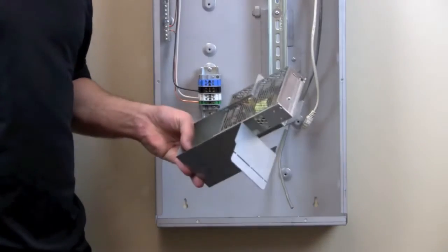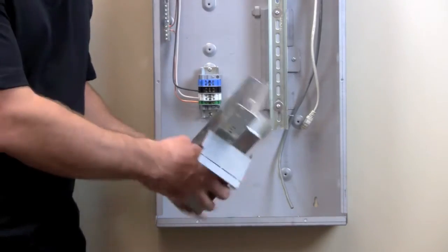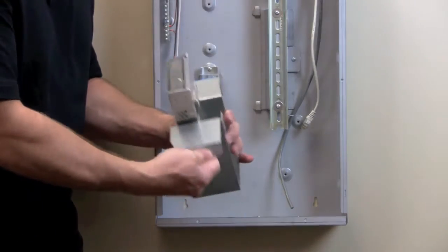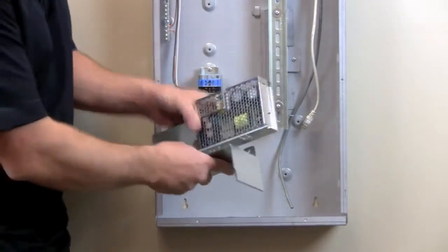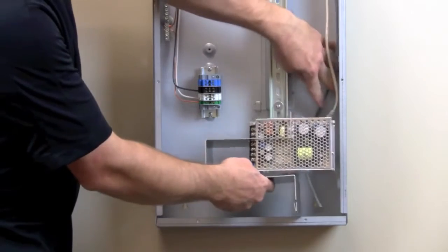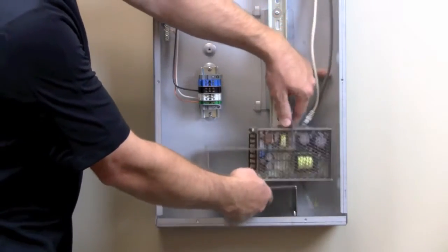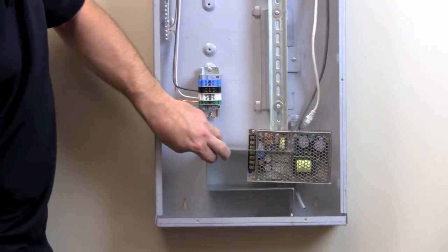In order to install the power supply mounting bracket with this two slot panel, we obviously want to bend this back, and you can see it's real easy, it just bends right back there. And we're going to go ahead and use the existing screws that we just had and screw it into place.